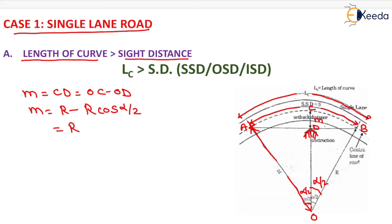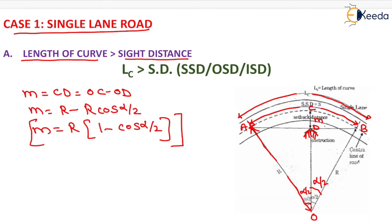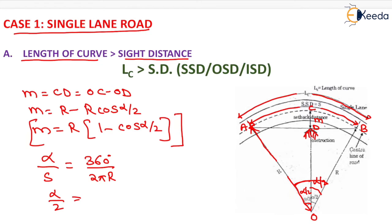The value of M will be equal to R minus R cos(α/2), which simplifies to R(1 - cos α/2). That is the setback distance for a single lane road when the length of curve is greater than side distance. We calculate alpha by 2 using the concept of perimeter of a circle: for angle alpha, the arc length equals S, and for 360 degrees the perimeter is 2πR. Solving this gives α/2 = 180·S / (2πR).